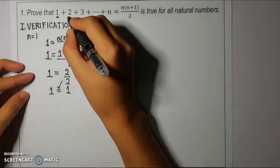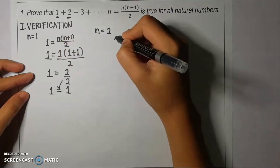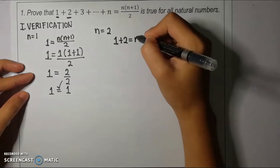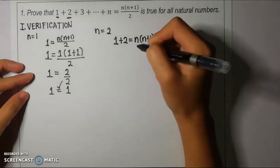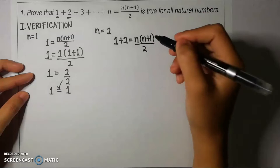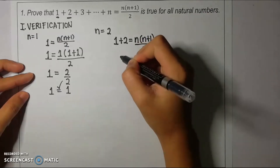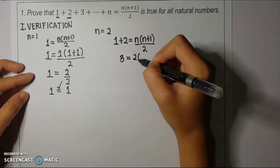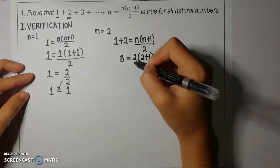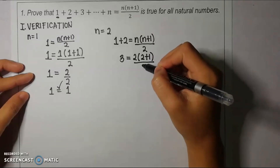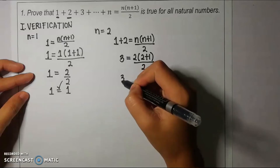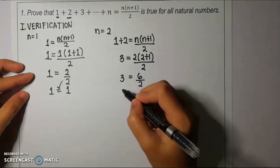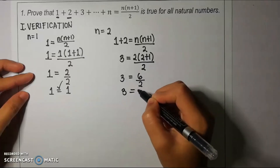For n equal to 2, we write the first two terms of the series: 1 plus 2, and equate with n(n+1)/2. Replacing n with 2: 1 plus 2 equals 3, which equals 2 times (2+1) over 2, that is 2 times 3 equals 6 over 2, therefore 3 equals 3. The second verification also holds true.